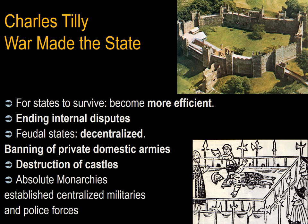Feudal states were largely decentralized. You didn't have a central leader; rather you had a leader with other leaders that owed that leader service, and below those were more leaders that owed service. There was considerable effort invested in the banning of private domestic armies of the different lords and the destruction of their castles. In their place, the absolute monarchs of Europe established centralized militaries for external defense and police forces for maintaining law and order in the interior. You can see here Framlingham Castle, which was eventually dismantled in Suffolk, and the Earl of Essex, Devereux, being executed in 1601 for his revolt against the Queen of England.